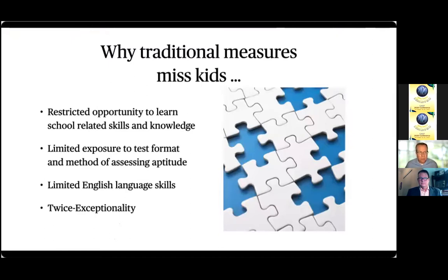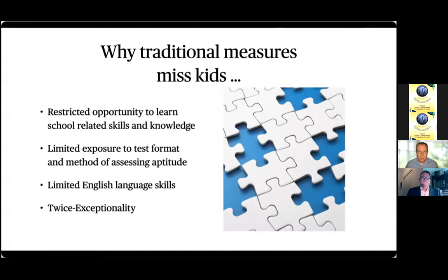Kids from low SES have also had limited exposure to test formats and methods of assessing aptitude. As a publisher, one of the most successful books in the gifted education category on Amazon is essentially a test prep book for the CogAT. There's a group of parents buying test prep books in first and second grade, drilling kids on test format, giving them practice in analogical thinking and other thinking skills tested on those instruments. Those kids come in at a way higher level in terms of ability to score on those tests than kids who haven't been exposed to those things.